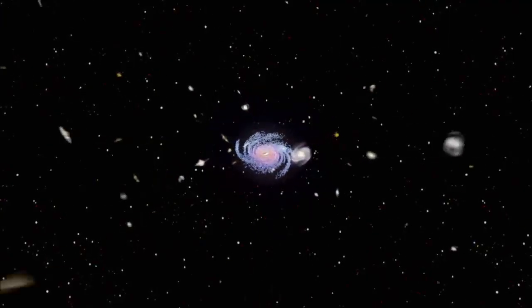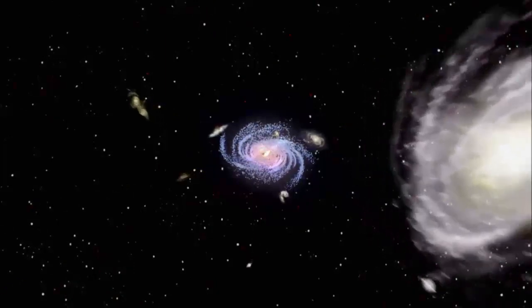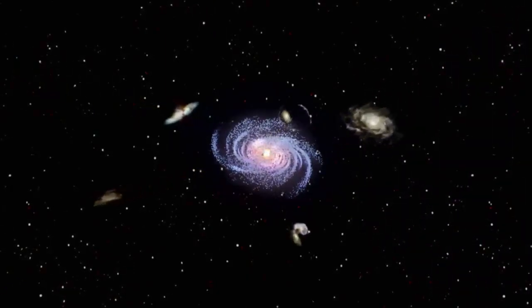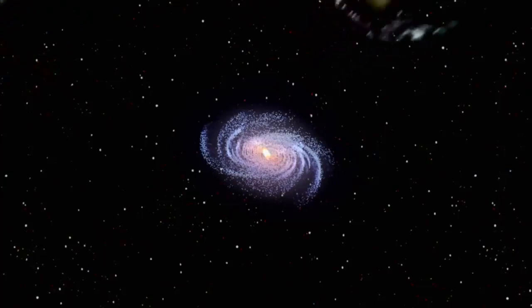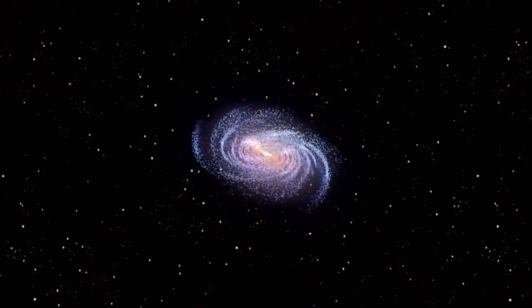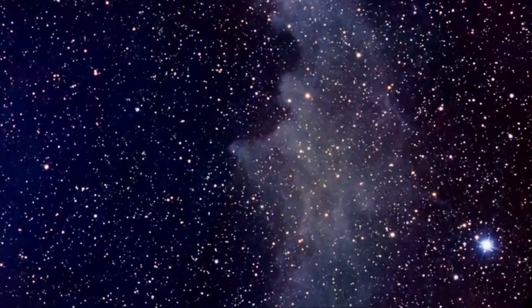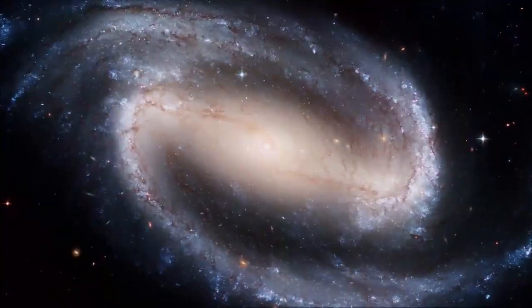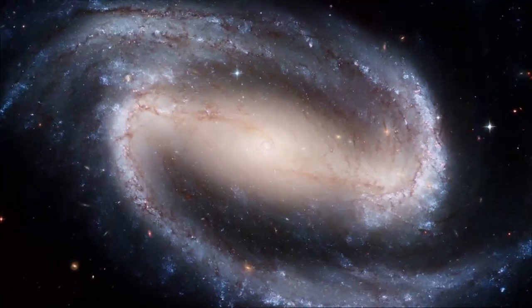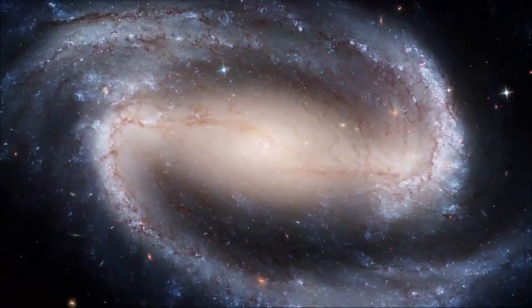We can never get far enough away from our own galaxy to actually see it. But by looking at other galaxies and comparing what we know about our own galaxy, we've got a pretty good picture of the Milky Way. The very first time we saw galaxies through telescopes, we didn't even know they were galaxies. We thought they were just nebulae in our own galaxy. And we were just amazed by the beautiful spiral shape. So it was sort of natural for astronomers to classify galaxies according to their shape, what we see.